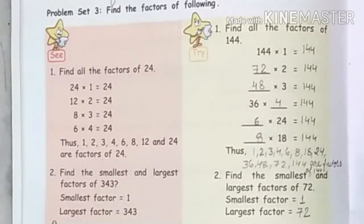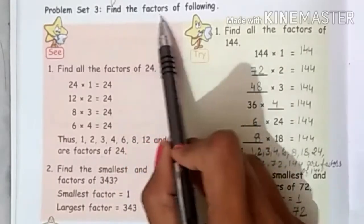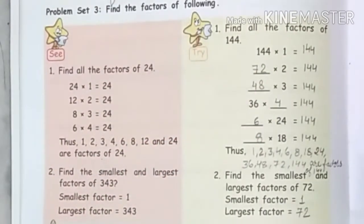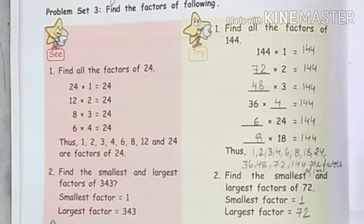Let's do problem set 3. The question is, find the factors of the following. Factors means that number comes from which table. Like 25, so the factors are 1, 5 and 25, because 25 comes in table 1, 5, and 25.